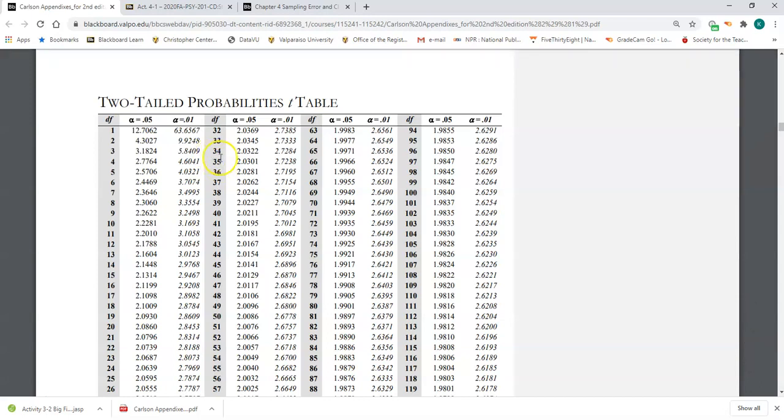So it's 34. And then you'd come over and you'd see that under the alpha 0.05 across from 34, the value is 2.0322. So that is the value that you'll need to multiply the SEM by in order to find the margin of error.